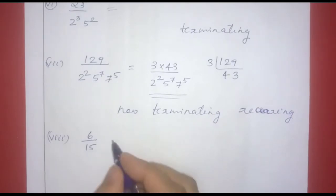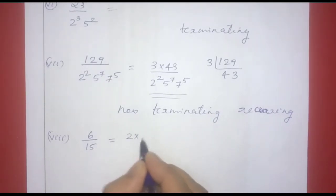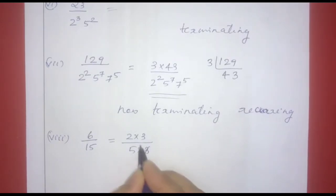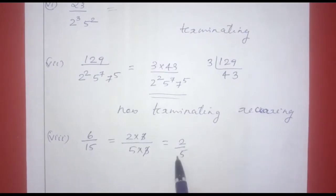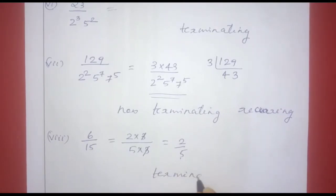Next one: 6 by 15. We simplify: 6 is 2 into 3 and 15 is 5 into 3. After cancellation, the denominator is 5, which is of the form 2 raised to n into 5 raised to m. Therefore, the decimal expansion is terminating.